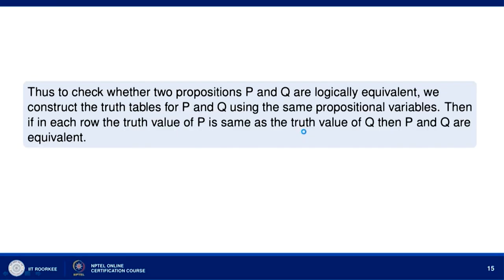To check whether two propositions P and Q are logically equivalent, we construct truth tables for both using the same propositional variables. Then if in each row the truth value of P is the same as the truth value of Q, we say that P and Q are logically equivalent.